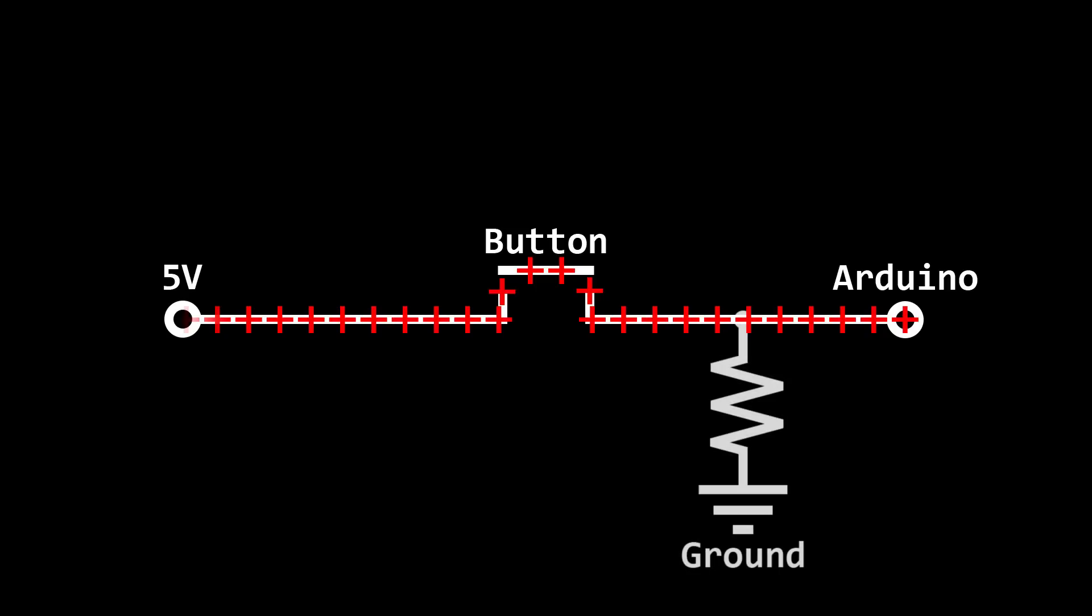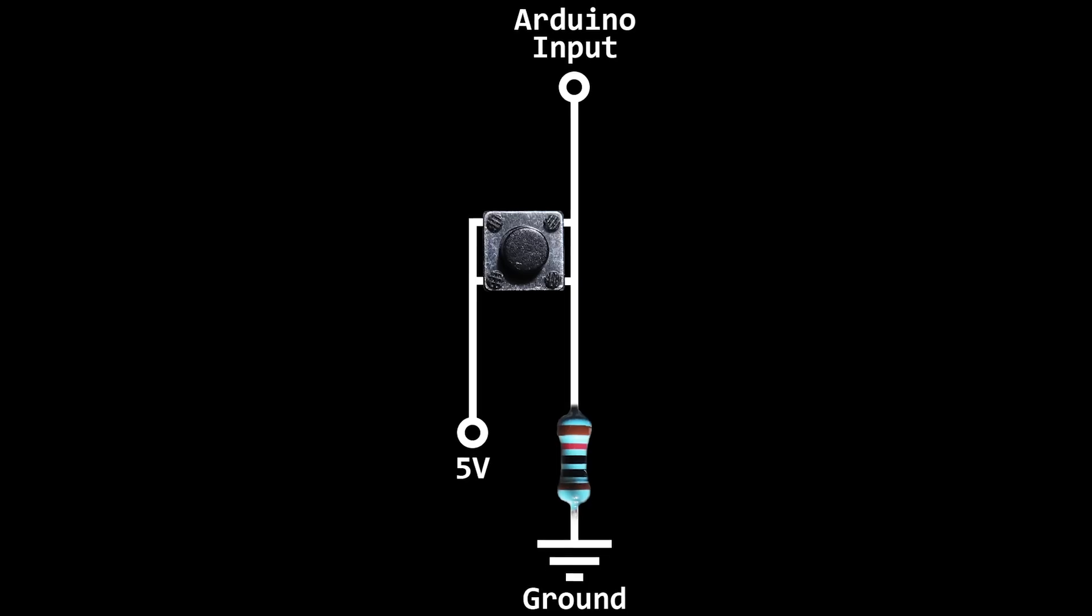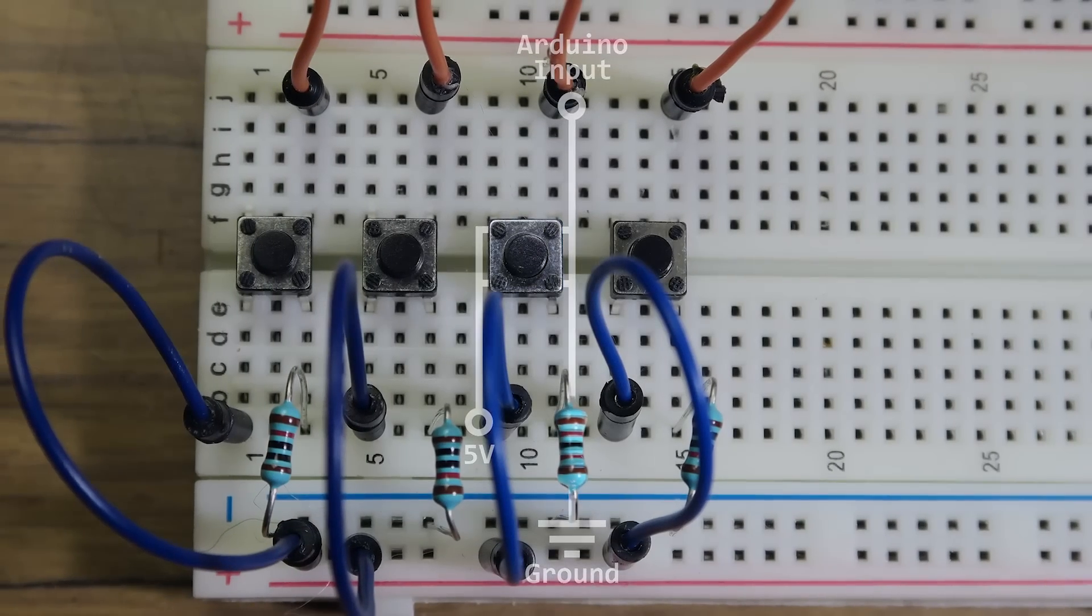To solve this problem, we can connect resistors between the Arduino pins and ground. This lets the charge slowly drain away when the button is released. The layout of the button makes it extremely easy to add the resistor.